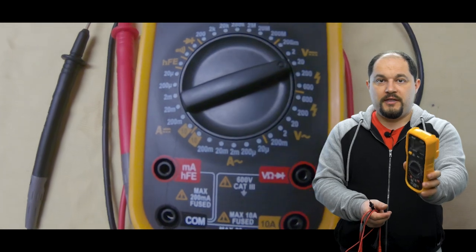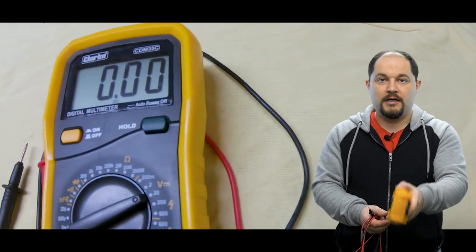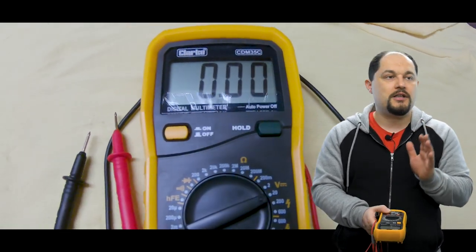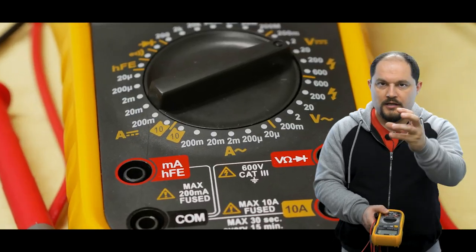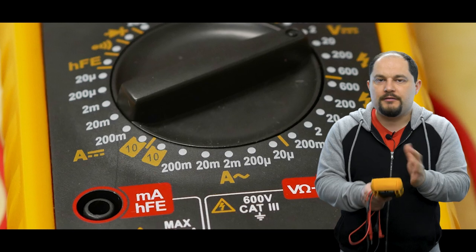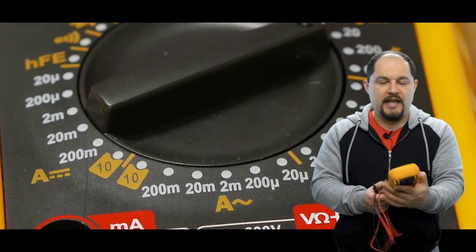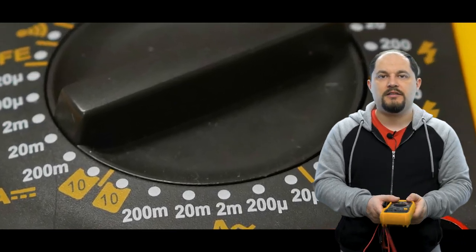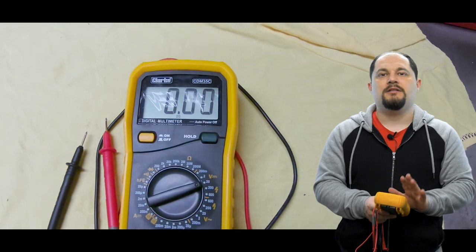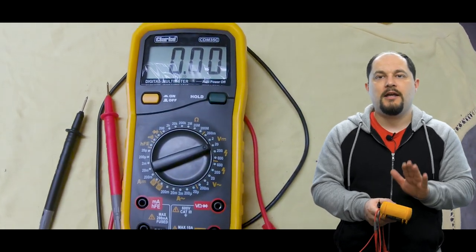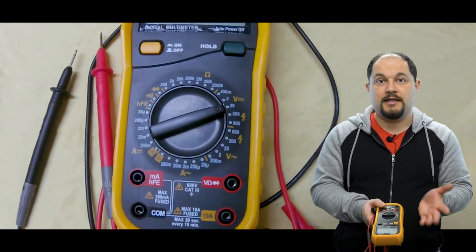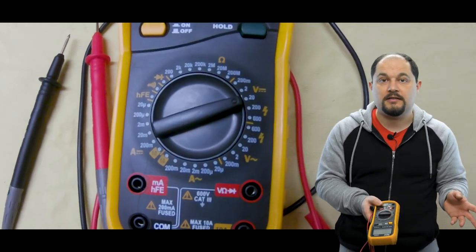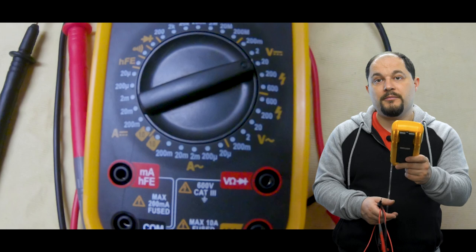Definitely recommend to get one if you want to check your bike's charging voltage or just diagnose a little electric solenoid or whatever. It's endless usability for these. Get a multimeter if you start working on your bike, especially if it's an older bike like mine. It's 23 years old now, eventually it's going to have some electrical problems and this will come in handy a lot.